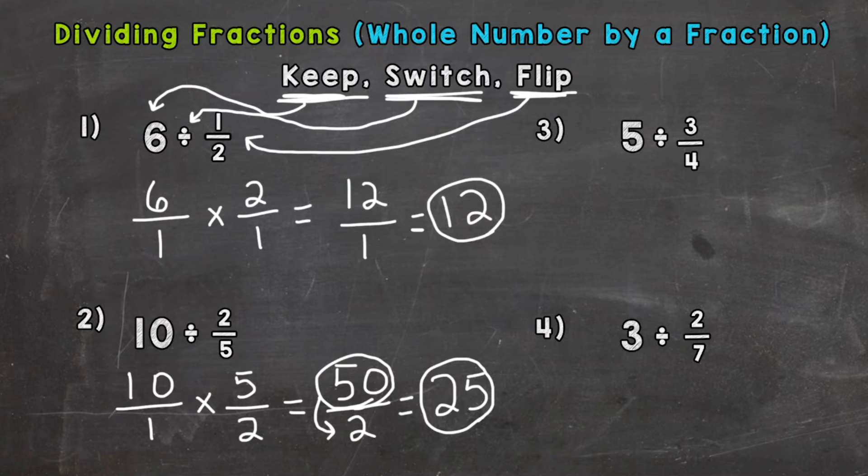For number three, we have 5 divided by 3/4. So keep, switch, and flip. So we have 5 over 1 times 4/3. 5 times 4 is 20, and 1 times 3 is 3. So we get 20/3.